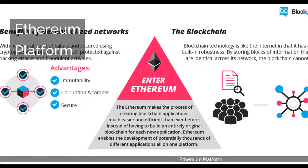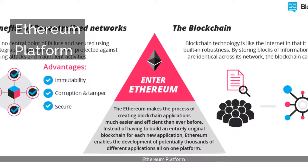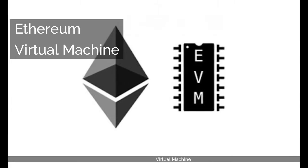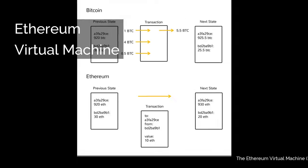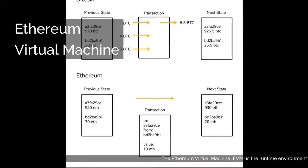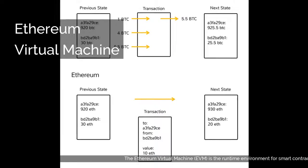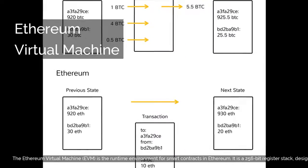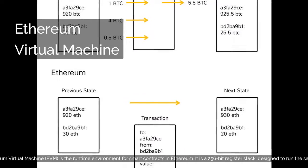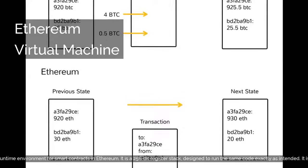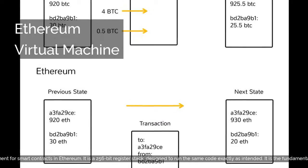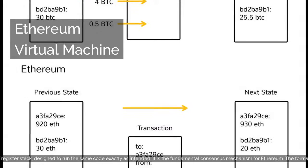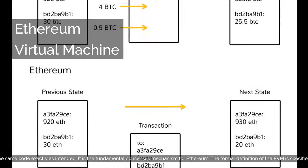The Ethereum Virtual Machine, EVM, is the runtime environment for smart contracts in Ethereum. It is a 256-bit register stack, designed to run the same code exactly as intended. It is the fundamental consensus mechanism for Ethereum.